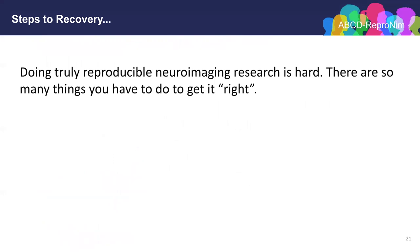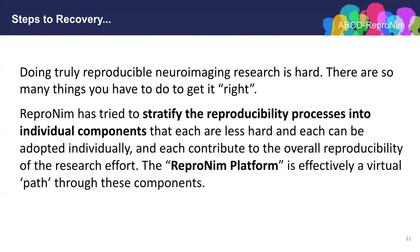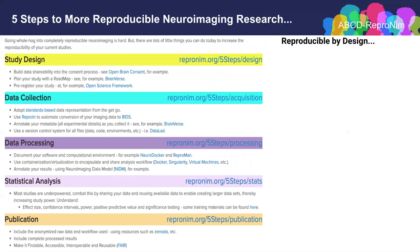Doing truly reproducible neuroimaging research is hard — there are so many things you have to do to get it right. ReproNim has also tried to stratify the reproducibility processes into individual components that each are less hard and each can be adopted individually, and each together contribute to the overall reproducibility of the research effort. The ReproNim platform is an effective virtual path through each of these components. At a high level, the five steps to more reproducible neuroimaging research that ReproNim pushes are divided into steps that have to do with study design, data collection, data processing, statistical analysis, and publication.